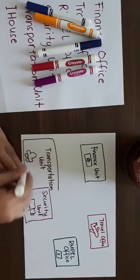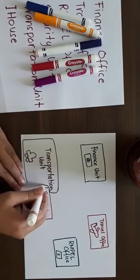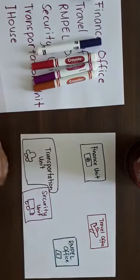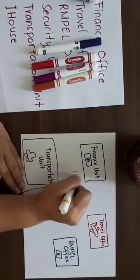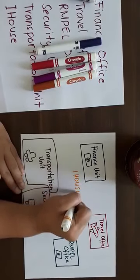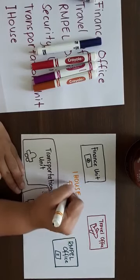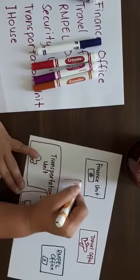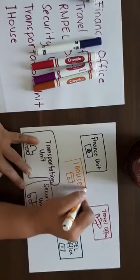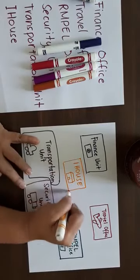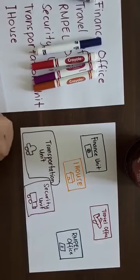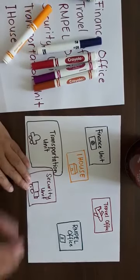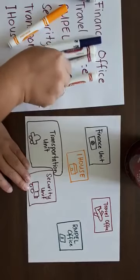Cars here. And then the last is the house. You have to show, by putting lines on your paper and arrows, how these units work together. And it has to explain how they are connected, or what are the jobs of each unit.